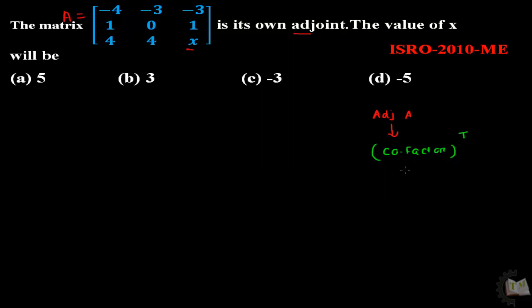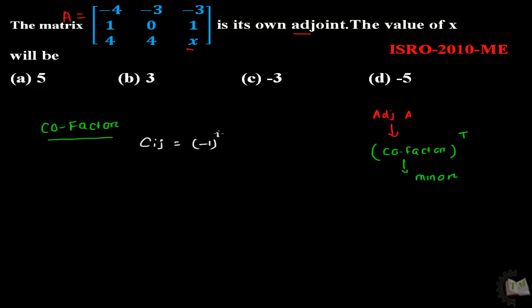How do we calculate the cofactor? To calculate the cofactor, you have to calculate the minor of the matrix. The formula is: Cij equals minus 1 to the power i plus j, times Mij, where Mij is called the minor, i is the row and j is the column.